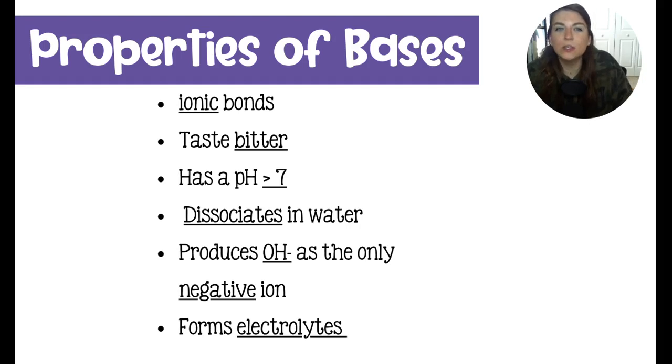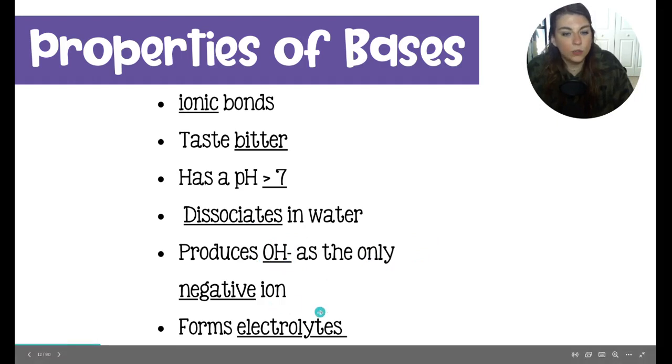Some properties of bases that you may already know. Bases have ionic bonds. They taste bitter. If you've ever gotten soap in your mouth, that is what a base is. Soap is a base. So it's going to have that nasty, gross, bitter taste. It has a pH value greater than seven. It dissociates in water when it breaks apart. It is going to produce hydroxide as the only negative ion when it dissociates. And it can form electrolytes.